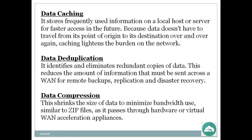Data deduplication identifies and eliminates redundant copies of data, reducing the amount of information that must be sent across a WAN for remote backups, replication, and disaster recovery. Data compression shrinks the size of data to minimize bandwidth use — similar to zip files — as it passes through hardware or virtual WAN acceleration appliances.